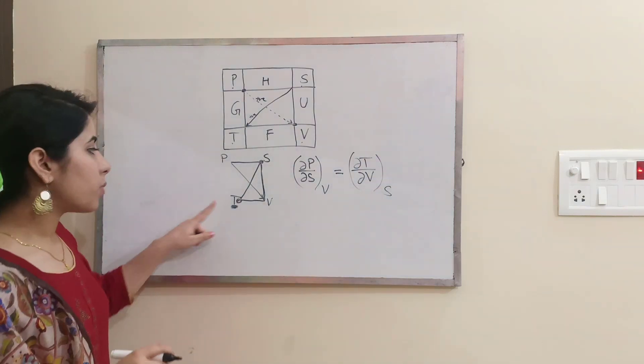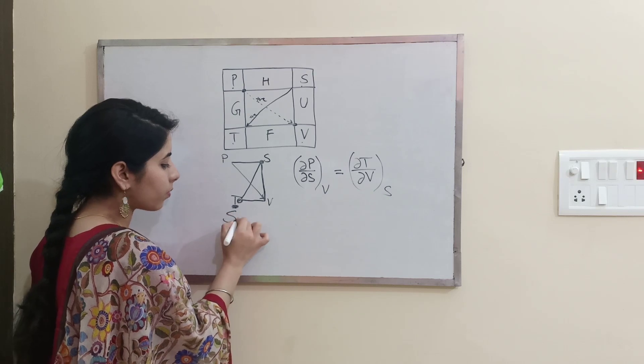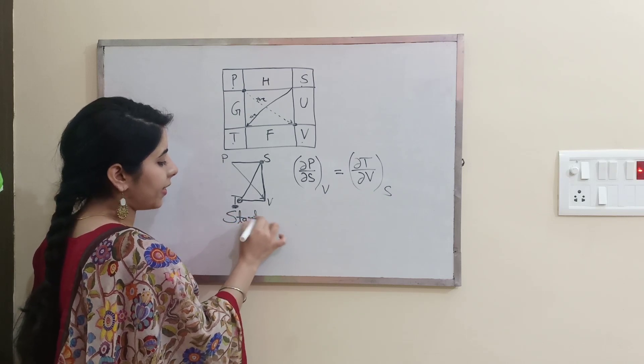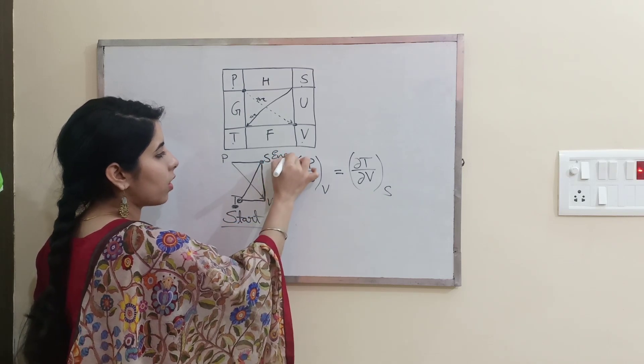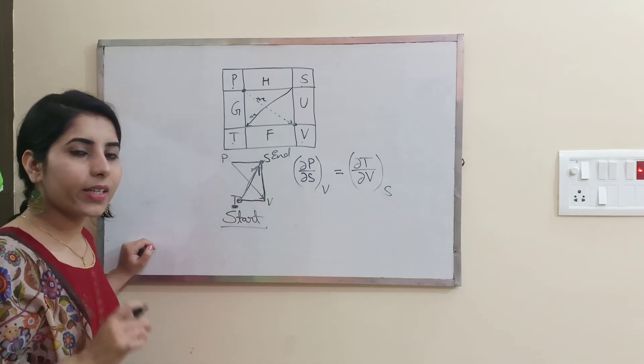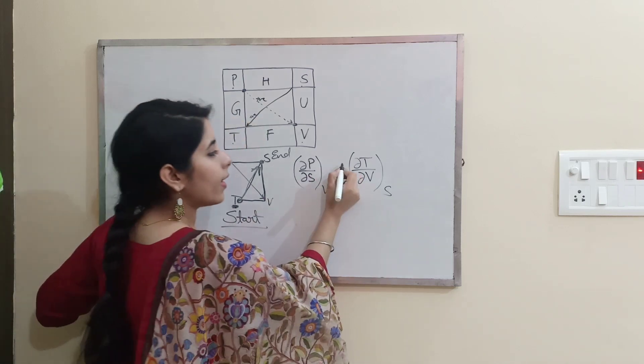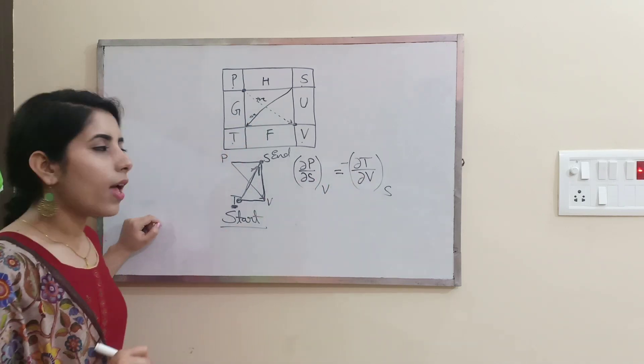We have started from T and we were going to S. This was our starting point and this is our end point. Is this the right direction of arrow? No, that means we have to take negative sign.